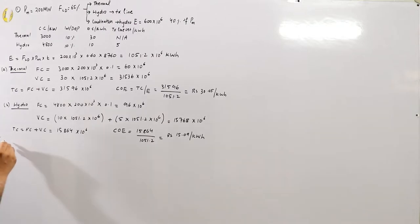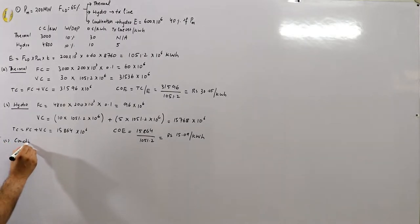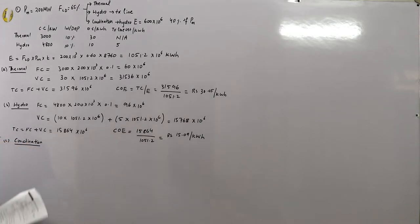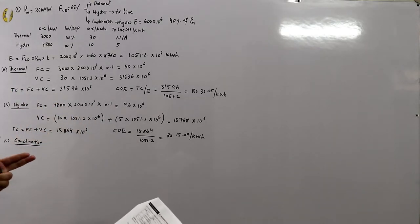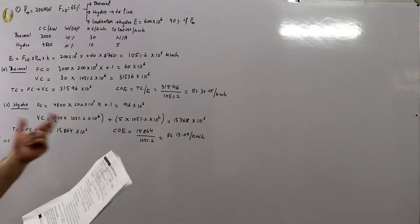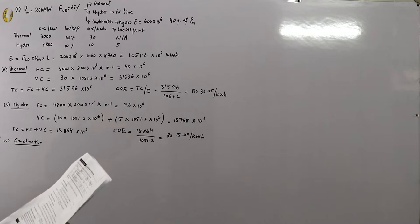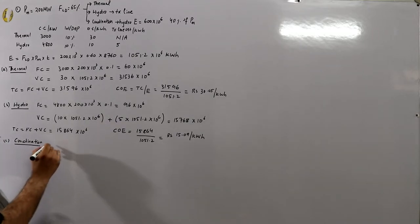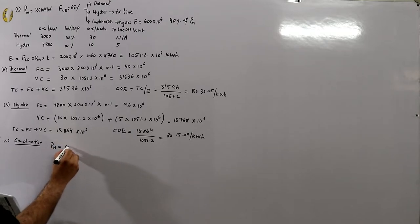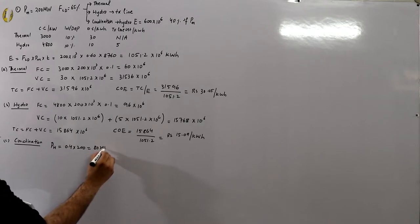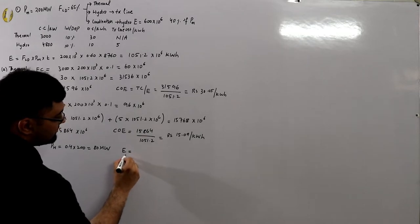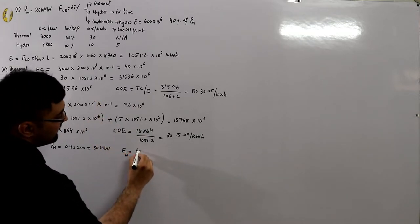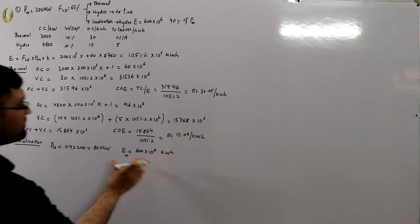Case C — coordination of thermal and hydro. The total load demand is 200 MW. Of this, 40% is provided by the hydro station, so P_hydro = 0.4 × 200 = 80 megawatts. The hydro also provides 600 × 10^6 kWh of energy units annually.